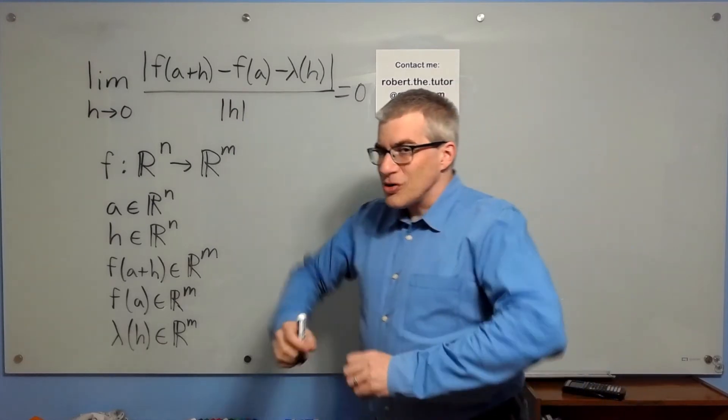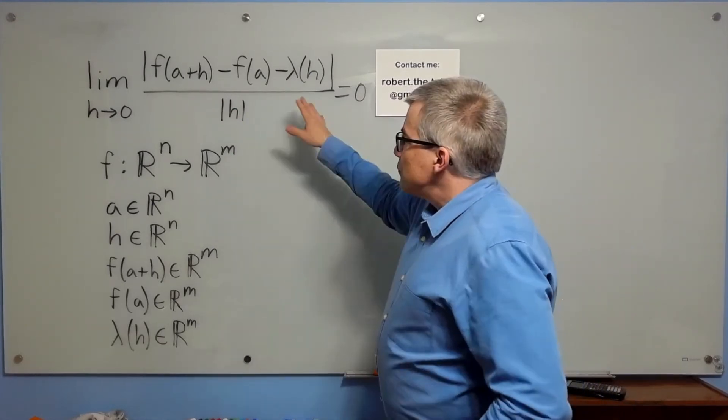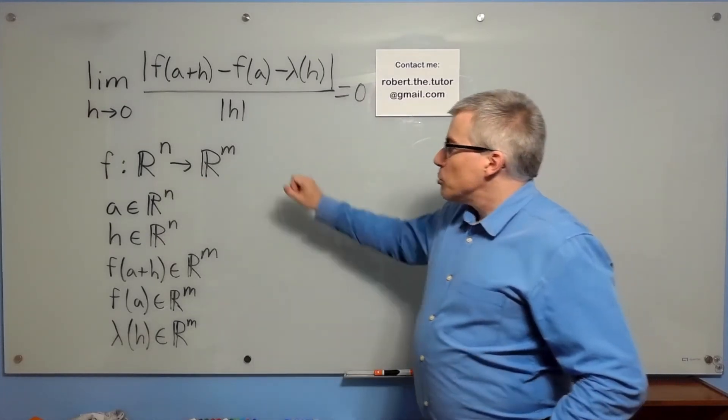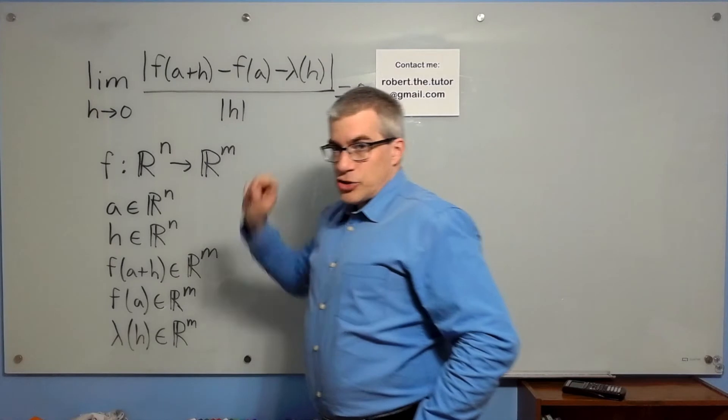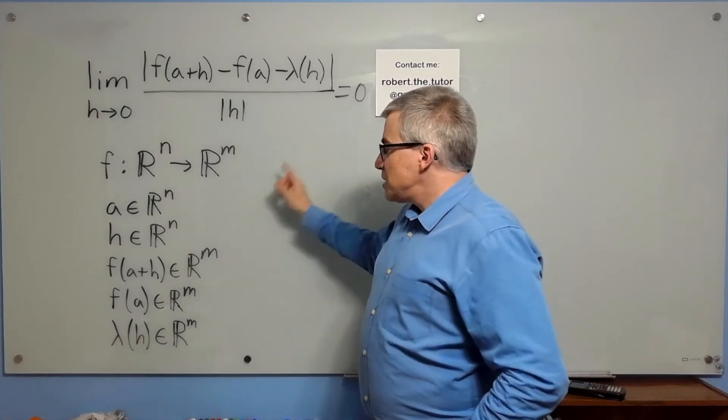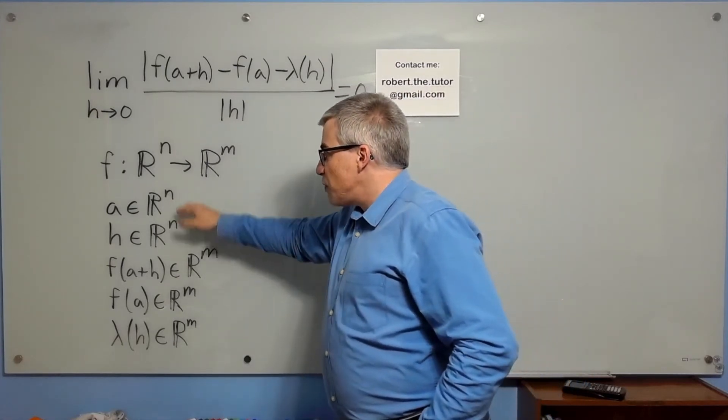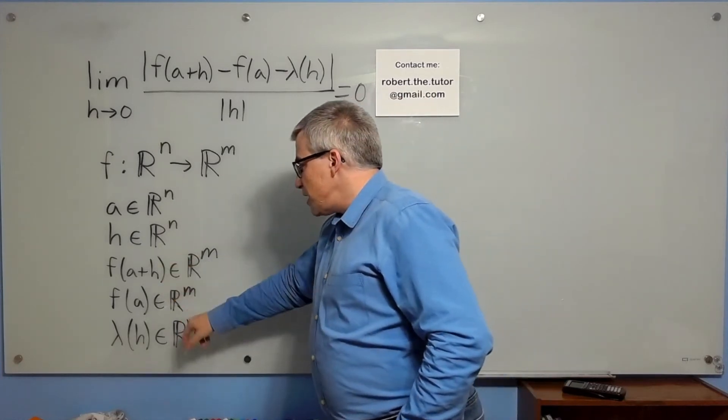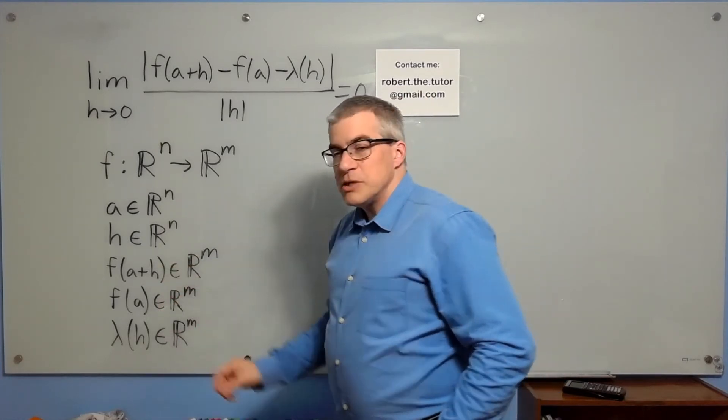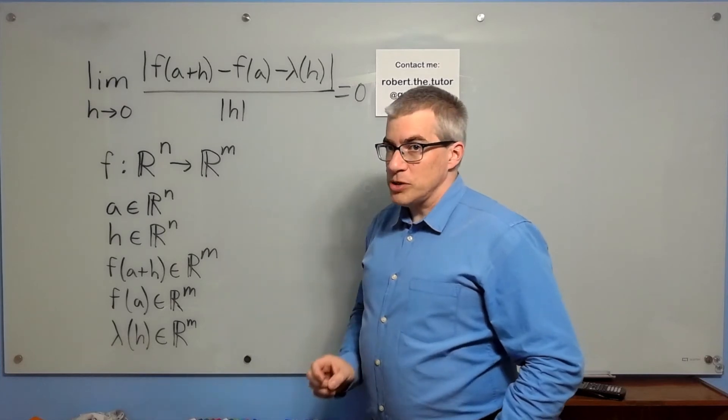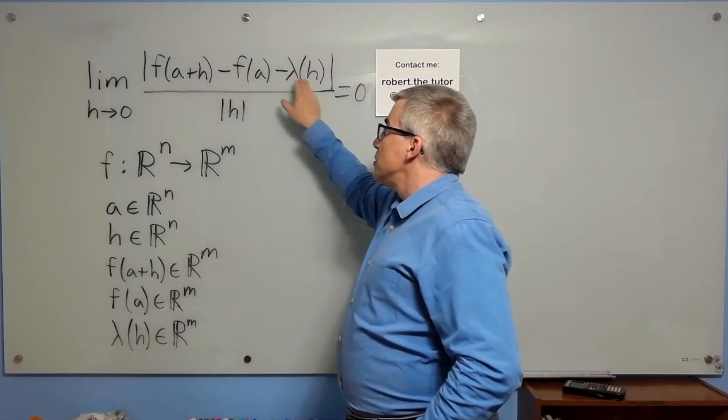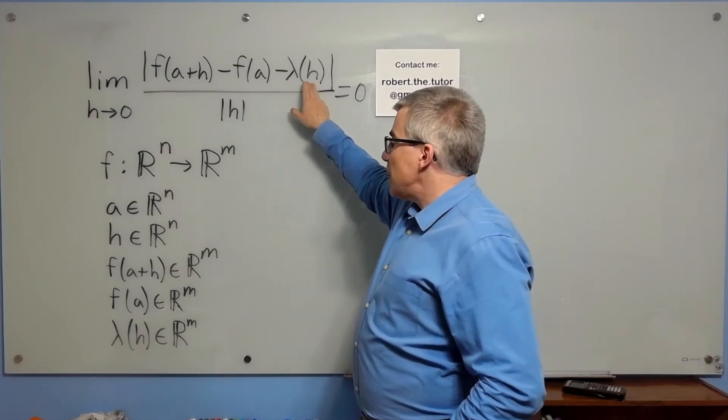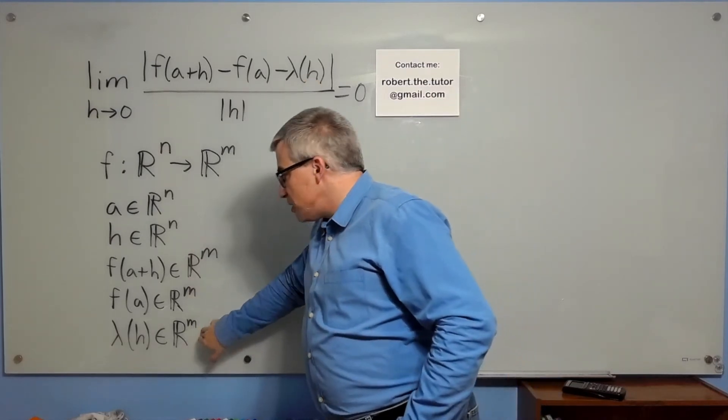But it can be hard to keep track of everything. So f is a function from R^n to R^m, and we're plugging into f things like a and a plus h. So a and a plus h must be elements of R^n because they're inputs. Likewise, f of a plus h and f of a must be elements of R^m because they're outputs. We're adding these things together, we're adding vectors, so this had better have the same dimensions. So lambda of h must also be an element of R^m.